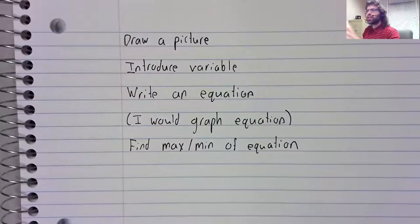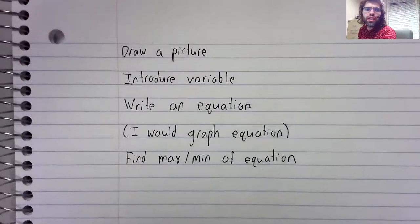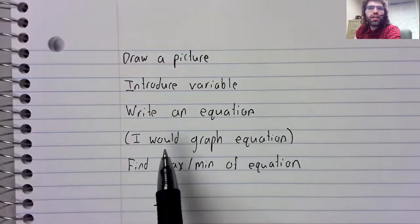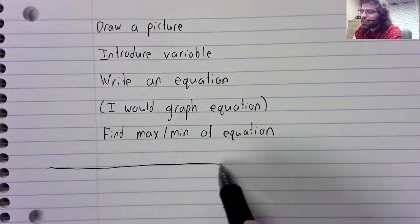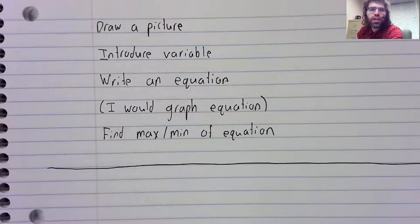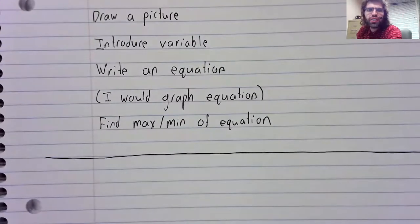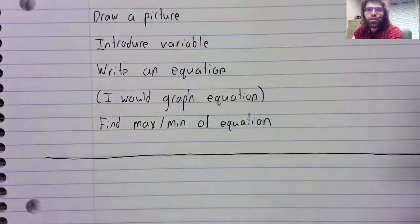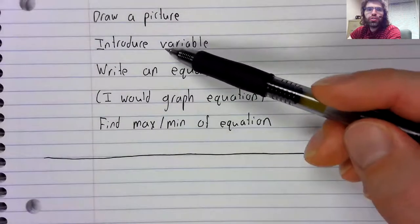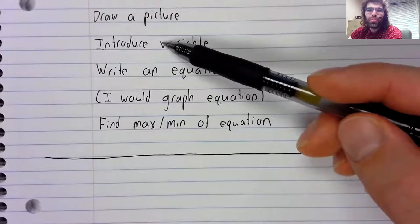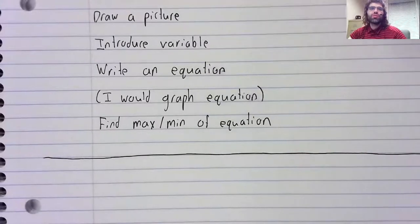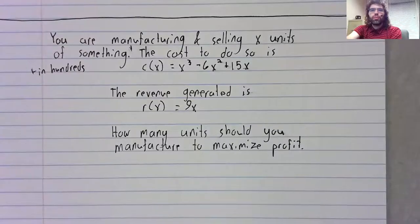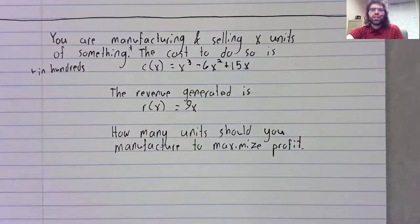So these are the guidelines the book lays out, with one guideline from me thrown in. Having said that, I am using the word guideline advisedly. We're not really going to do these first two steps. You are manufacturing and selling X units of something.